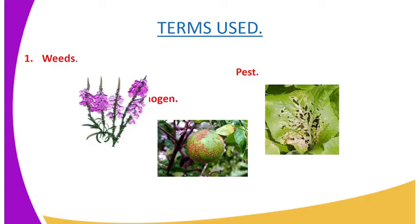In other words, weeds are plants growing in an area where they are not intended to grow and whose economic disadvantages outweigh their economic advantages. A pathogen is biologically defined as a disease-causing microorganism. A pest is any animal or organism that destroys crops in the field or damages stored agricultural produce.